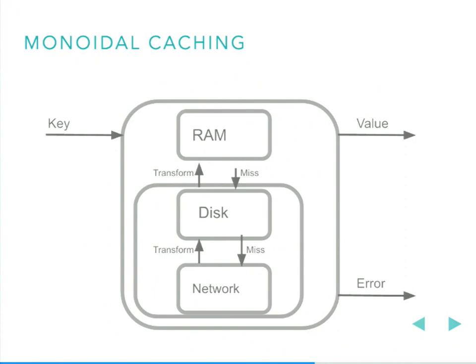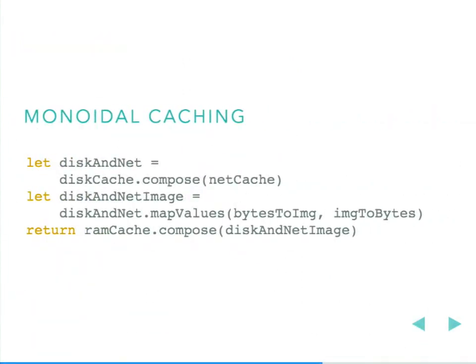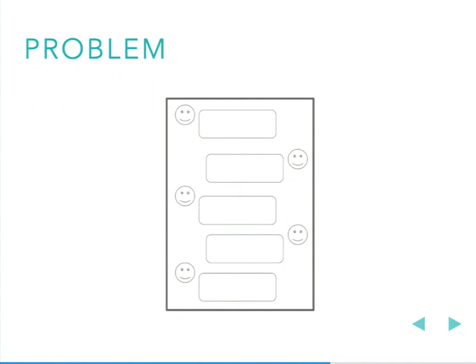Finally we can hook everything up together. We start with our imperative disk cache and imperative network cache — these are complex, handle errors, but we write them once, write tests, and whenever we fix a bug we fix it everywhere. We combine them, transform the composition into something that gives us back bitmaps, and because that decoding operation is expensive, we put it behind a memory cache. This is basically what it looks like in source, which is cool — but if you run this, you'll run into an issue pretty fast.